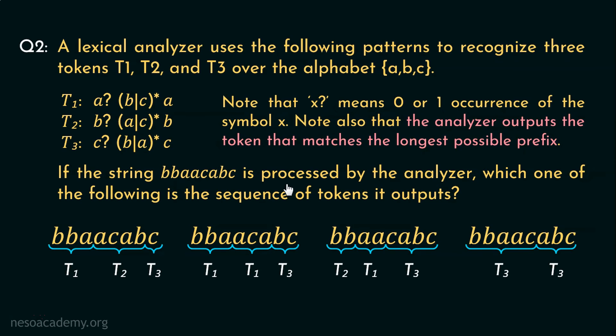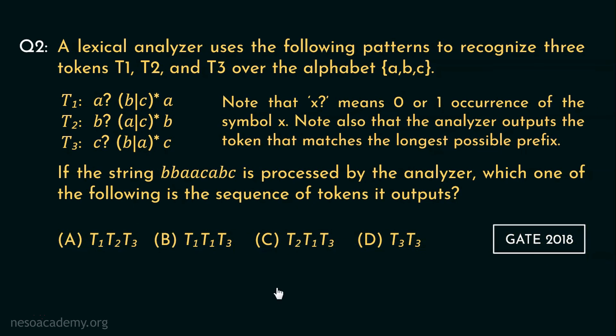Now focus on the second note. It says the analyzer outputs the token that matches the longest possible prefix. So in case of option A and B, the prefixes have three characters. In case of C, the prefix has only two characters. Only in case of D, the prefix has one, two, three, four, five, that is five characters. So yes, this is the token the lexical analyzer will produce as output. So for this question, option D is the only correct choice.